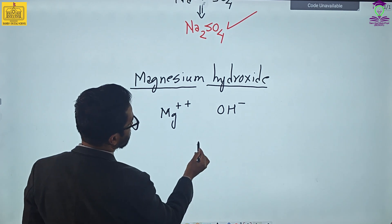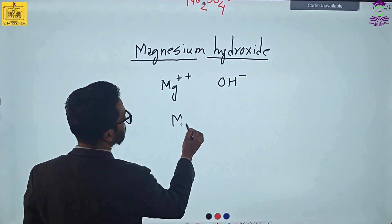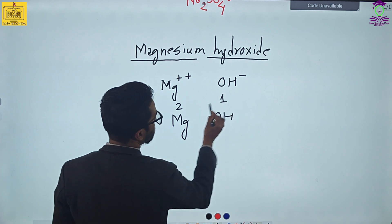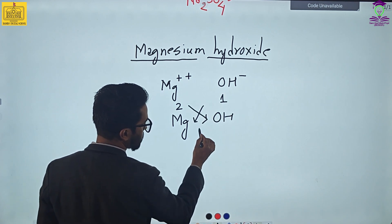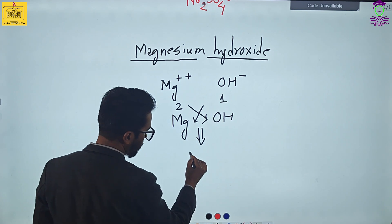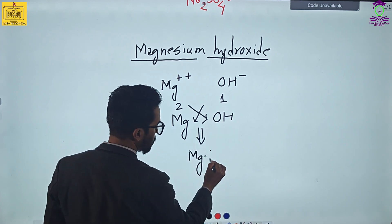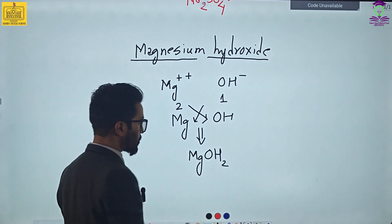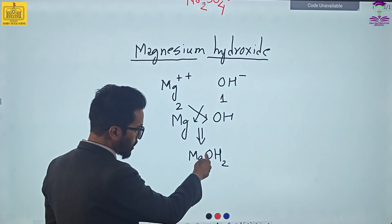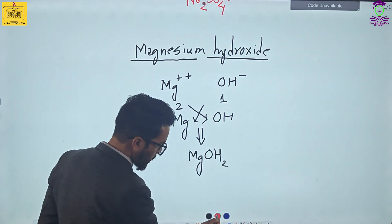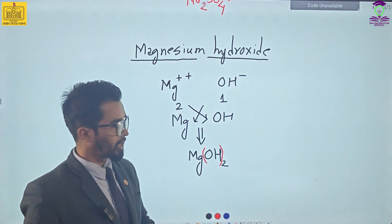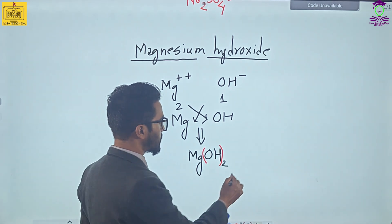Mg multiplied by 1 gives Mg, and OH multiplied by 2 gives OH₂. But you write it correctly as Mg(OH)₂, because OH₂ means there is 1 oxygen and 2 hydrogen, that's why we enclose it inside a bracket. This is the correct formula for magnesium hydroxide.